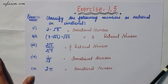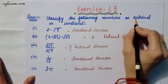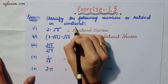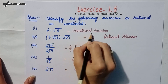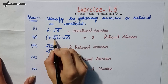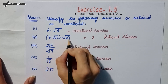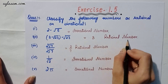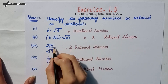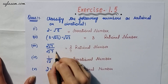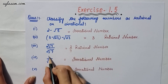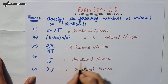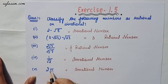Our first question says: classify the following numbers as rational or irrational. First part says 2 minus root 5, which is an irrational number. The second says 3 minus root 23 minus root 23, which is a rational number. Third part says 2 root 7 upon 2 root 7, that equals 2 by 7, which is a rational number. Fourth part says 1 pi root 2, which is irrational. Fifth part says 2 pi, which is irrational.